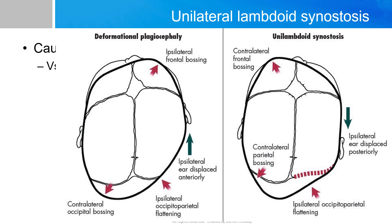The ipsilateral ear is displaced posteriorly because of the lack of growth on the ipsilateral side, and this causes posterior plagiocephaly to have its characteristic skewed appearance. It is named 'posterior' because of the fused sutures on the posterior side, other than the coronal suture.